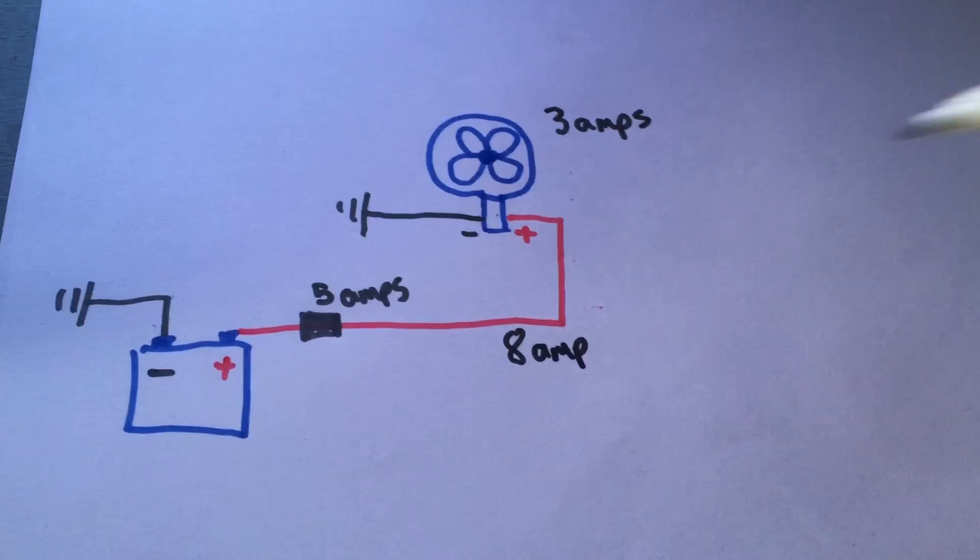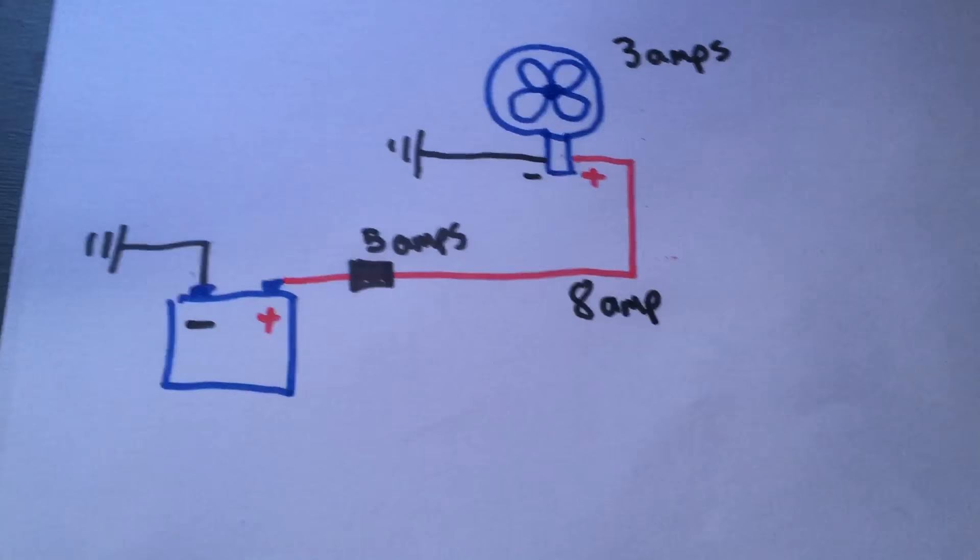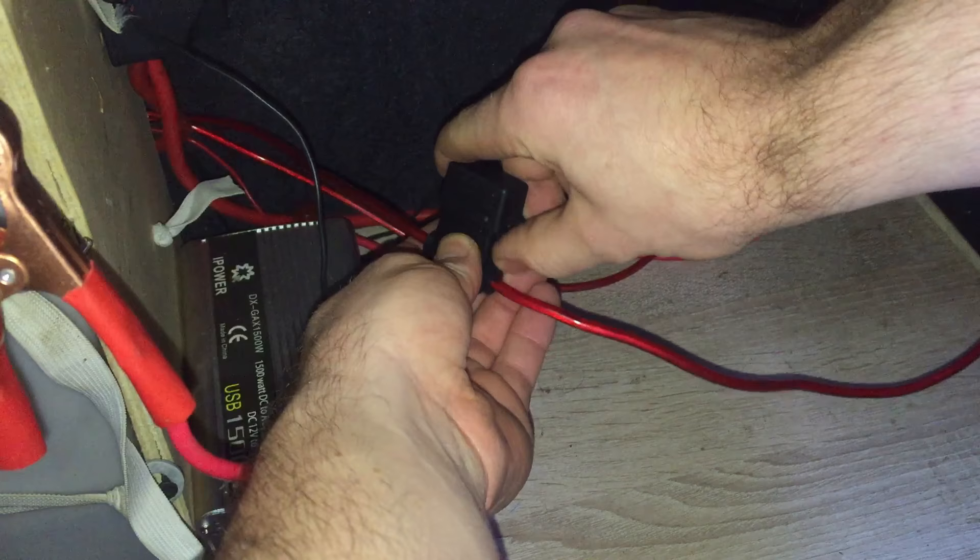Just make sure that the fuse is the weakest point on the whole circuit, that it's as near as you can get it to the positive terminal, and most importantly that all of your wire is heavier duty than the fuse.